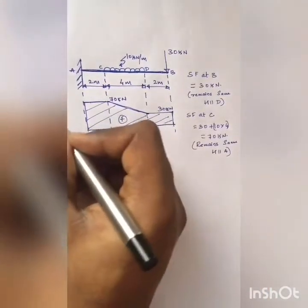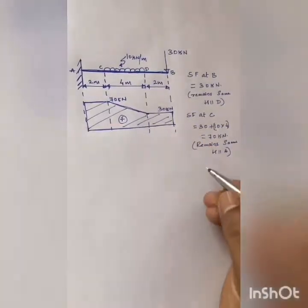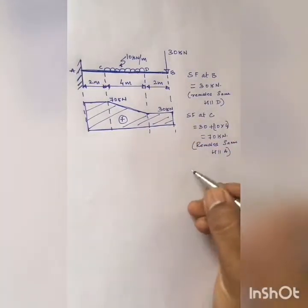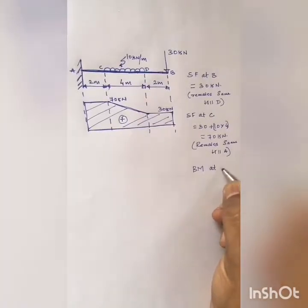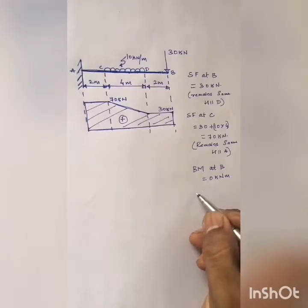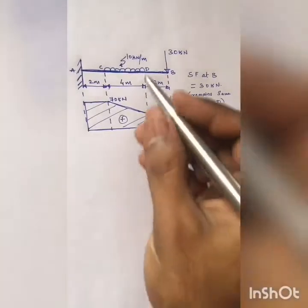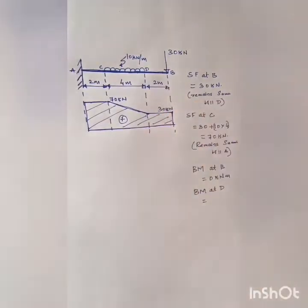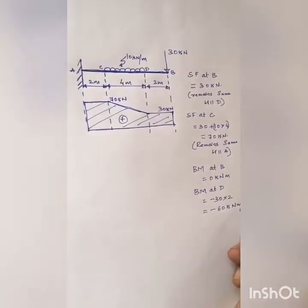Now I will start drawing the bending moment diagram. First let me find out the bending moments at the various salient points, starting from point B. At point B, although we have a force, we do not have any particular distance from that force, so bending moment at B will be equal to zero kilo Newton meter. Next, the bending moment at point D will be equal to minus 30 into 2, and it is negative because it produces a clockwise moment. So the bending moment at D is minus 60 kilo Newton meter.